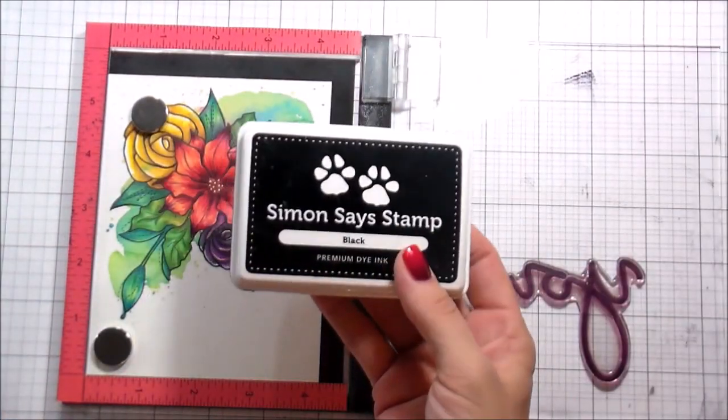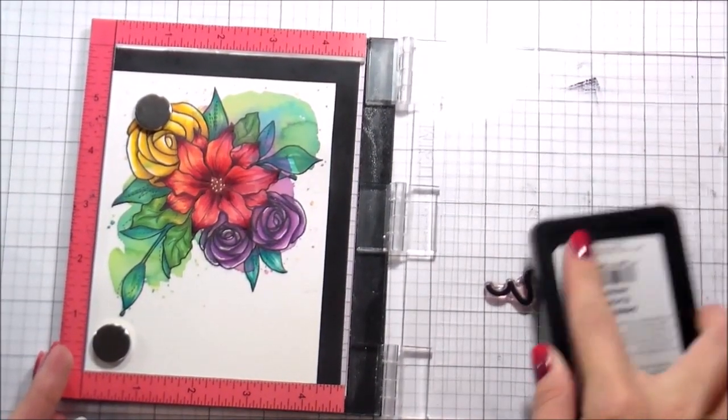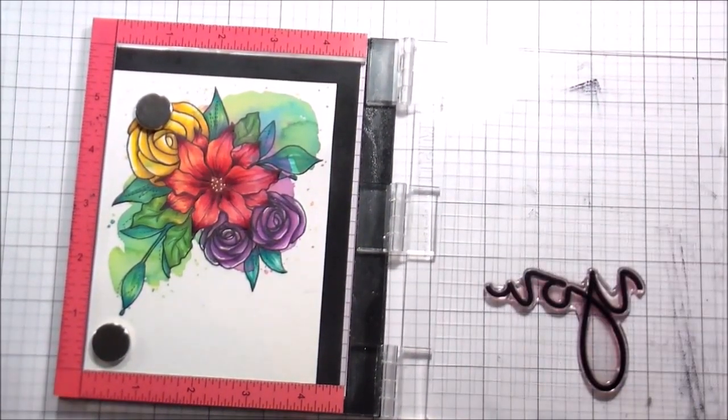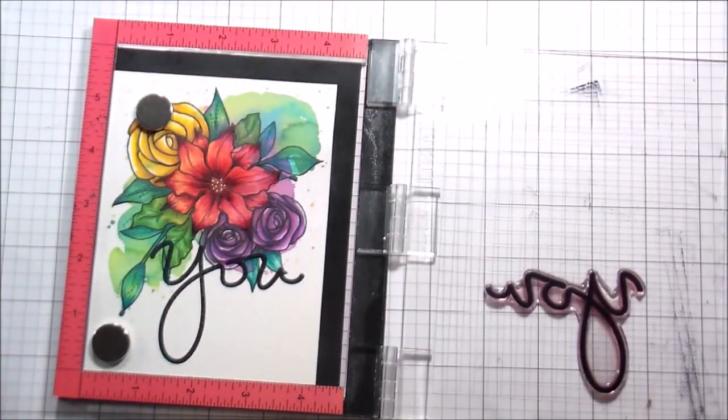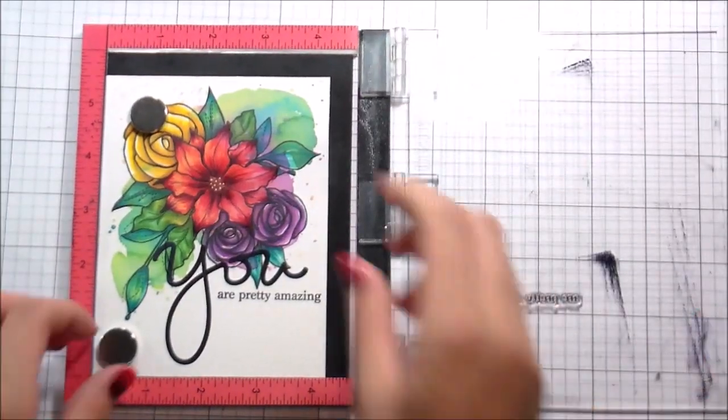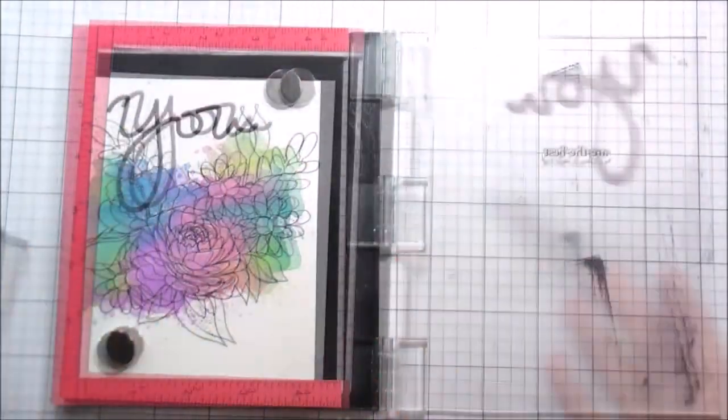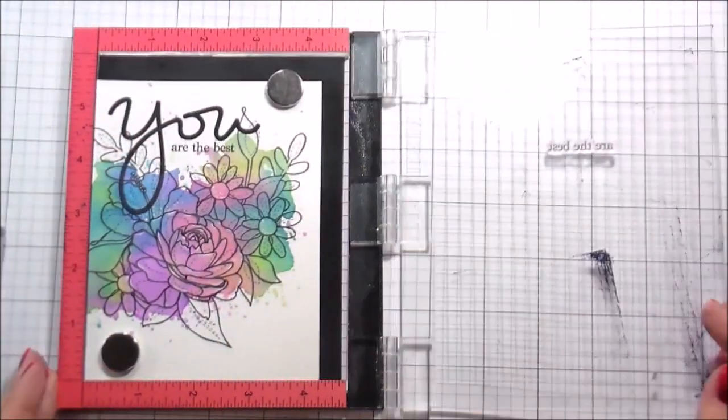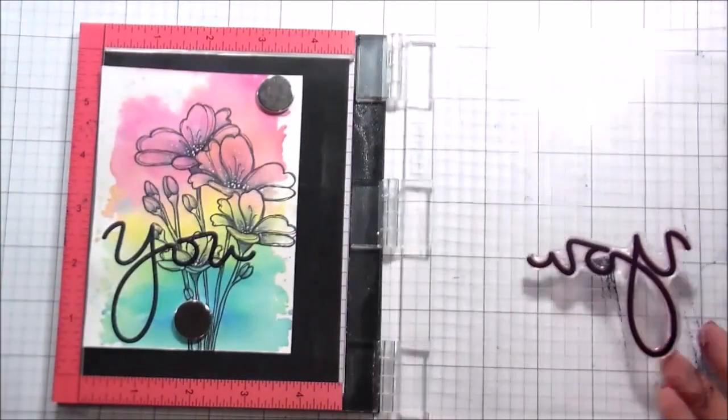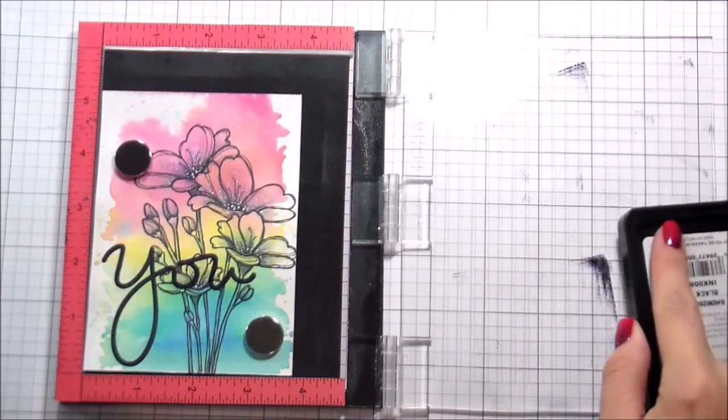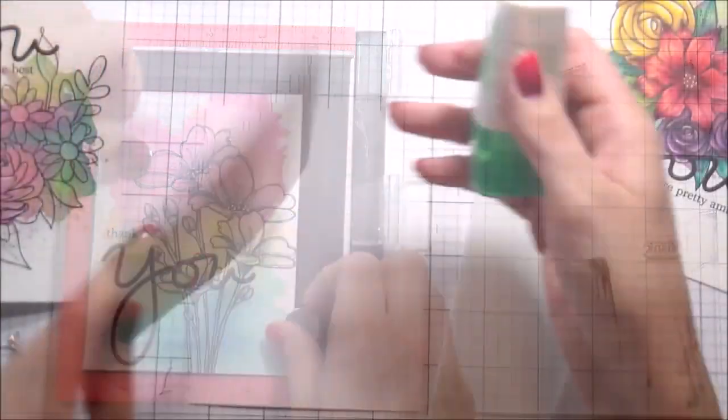This sentiment set is called You Matter by Simon Says Stamp. I'm stamping in their same black ink. It's a great ink for sentiments, super crisp. There's so many wonderful encouraging sentiments and I love it. This one says you are pretty amazing. This one says you are the best. On the last card, it's going to say thank you. For these, the white parts I added there, I just added some dots in the center of the flowers. I just have a cute little thank you here.